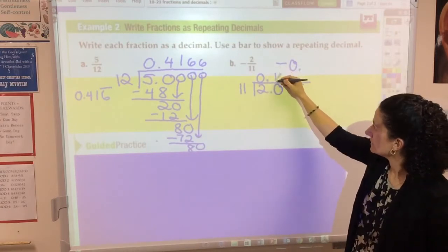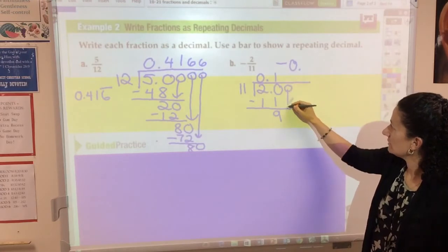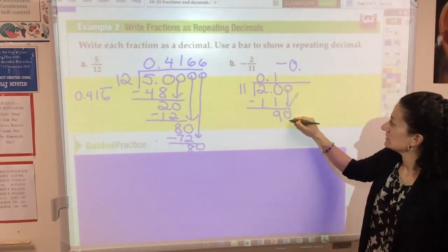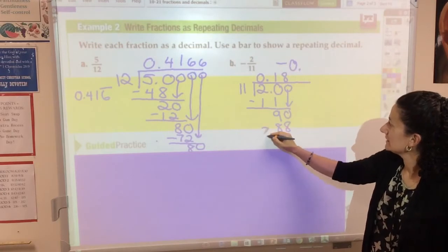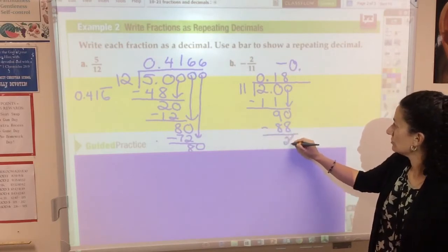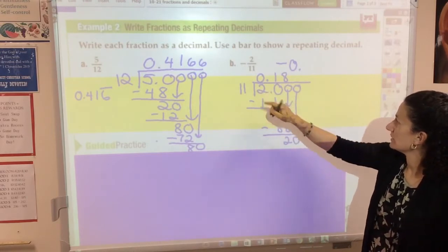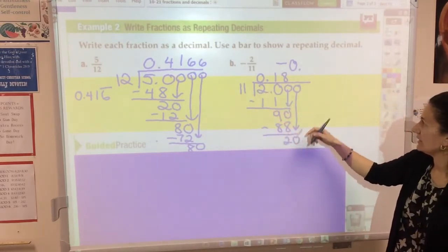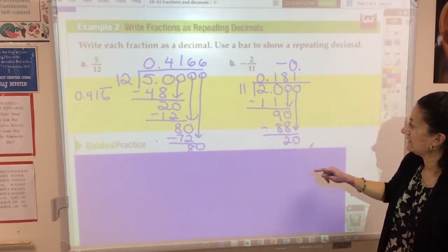11 goes into 20 one time, remainder 9. Bring down a 0. 11 goes into 90 eight times because 8 times 11 is 88. The remainder is 2. And look at this, I'm back to where I started. 11 goes into 20 one time, and I'm going to keep on getting the same thing: 20, 11, 90, 88.